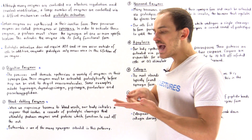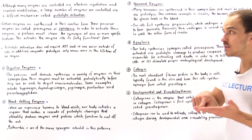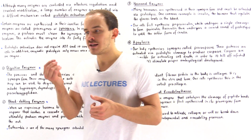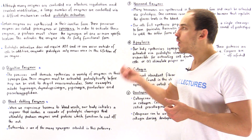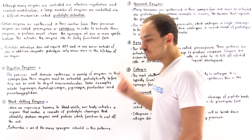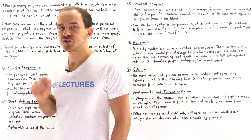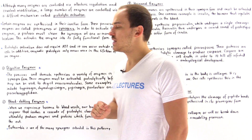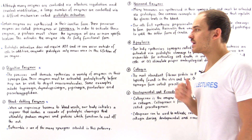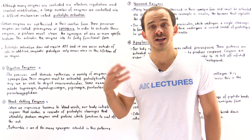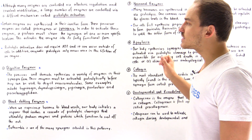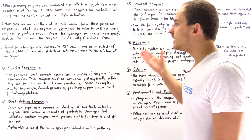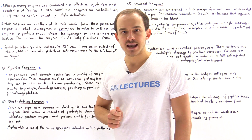Unlike allosteric regulation and covalent modifications such as phosphorylation, which can take place many times on any given enzyme, when a zymogen undergoes proteolytic activation it will only undergo this process once in the lifetime of that enzyme. So proteolytic activation does not require ATP and can readily take place outside the cells, and enzymatic proteolysis only occurs once in the lifetime of that enzyme.